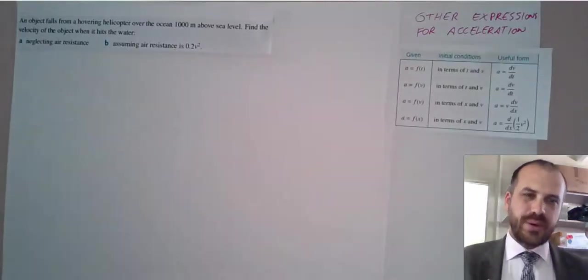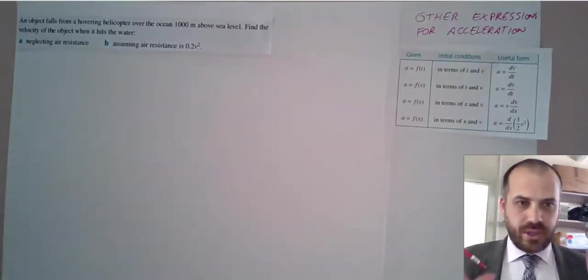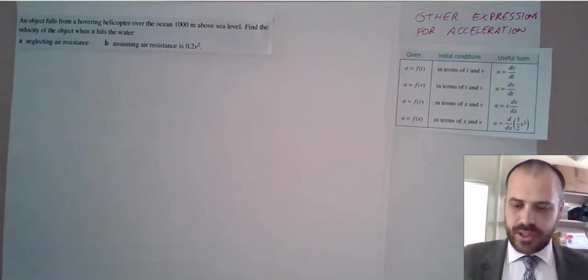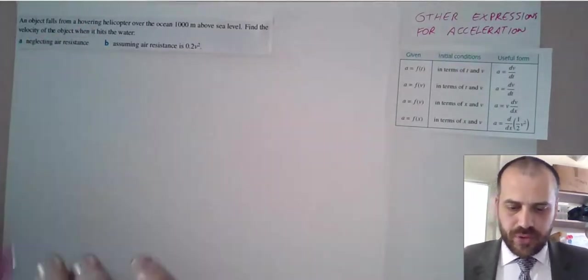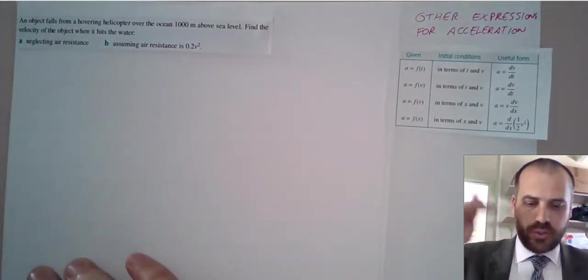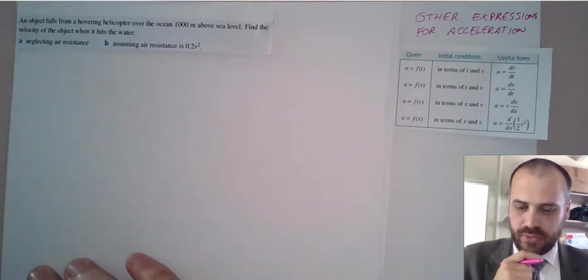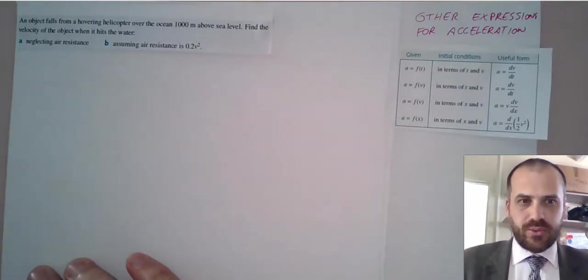One last question here. This one might look a little bit odd. You might be thinking, where on earth do we go with this one? An object falls from a hovering helicopter over the ocean 100 meters above sea level. Find the velocity of the object when it hits the water.